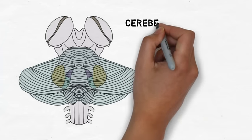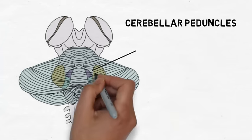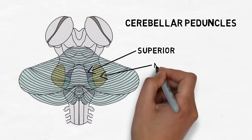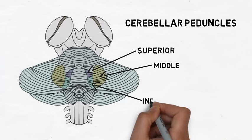The cerebellum communicates with the rest of the nervous system through three large pathways called the cerebellar peduncles, which include the superior, middle, and inferior cerebellar peduncles.